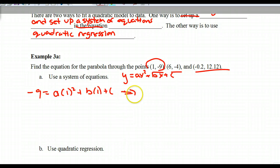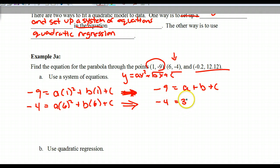That's the same thing as if I were to write it again. Negative 9 equals, what's 1 times 1? 1 times A is just A, right? Plus B plus C. So now I'm going to do it for the second point. This will be negative 4 equals A times 6 squared plus B times 6 plus C. So this will be negative 4 equals 36A plus 6B plus C. Do you guys see how I'm doing this?